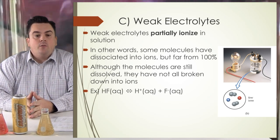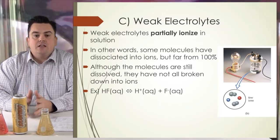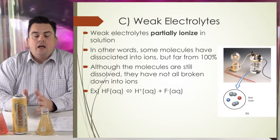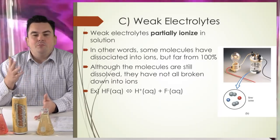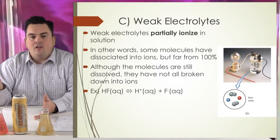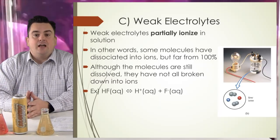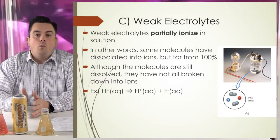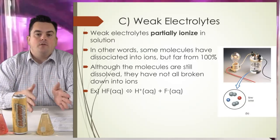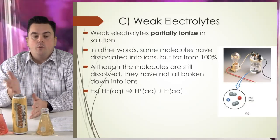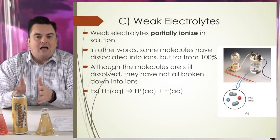In our example here, we have HF aqueous becoming H+ ions and F- ions. We have an arrow going both ways, meaning we don't completely have all ions — we still have some molecules left. On the previous slide we had a one-way arrow, meaning all molecules became ions for a strong electrolyte. Weak electrolytes like this are not completely ionizing.